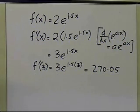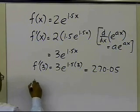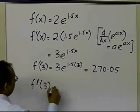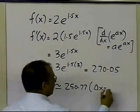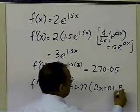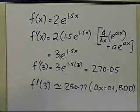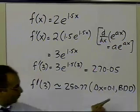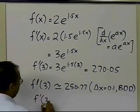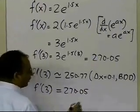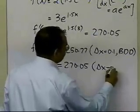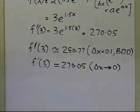From differential calculus, the exact answer is 270.05. From our approximate formula using delta x equal to 0.1 and the backward divided difference scheme, f prime of 3 is approximately equal to 250.77. The exact value with delta x approaching 0 is 270.05, up to 5 significant digits.